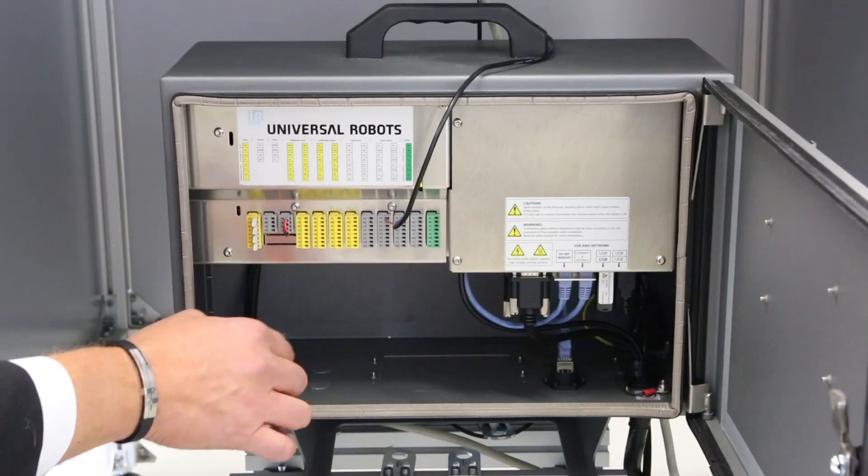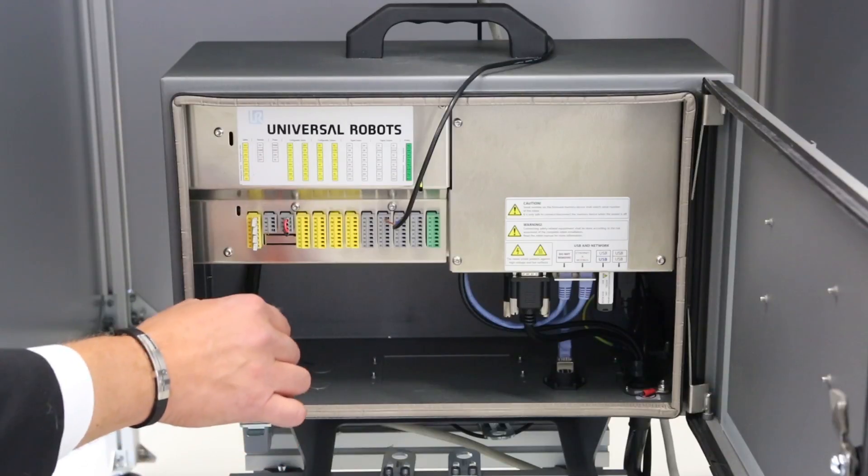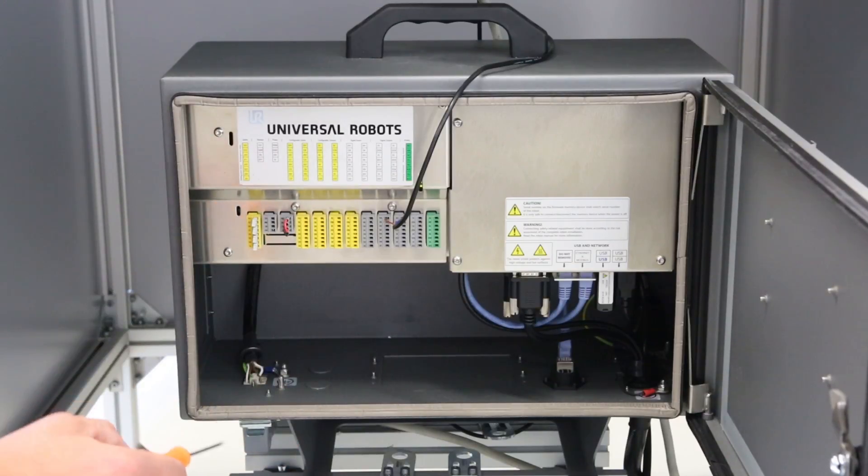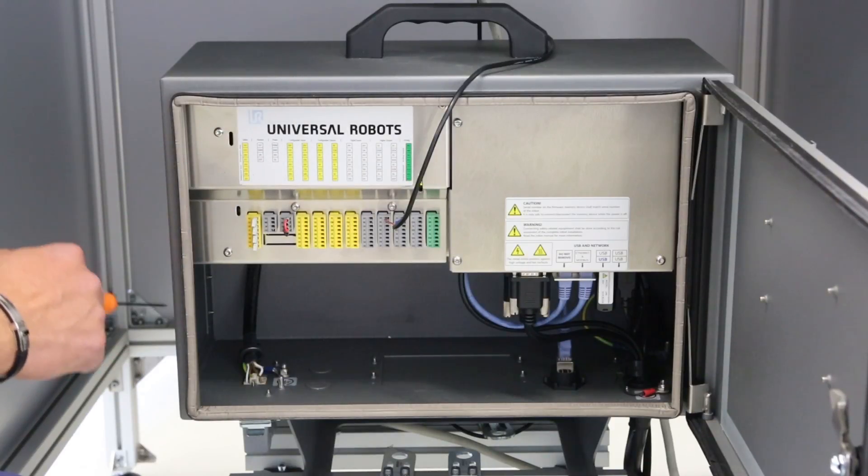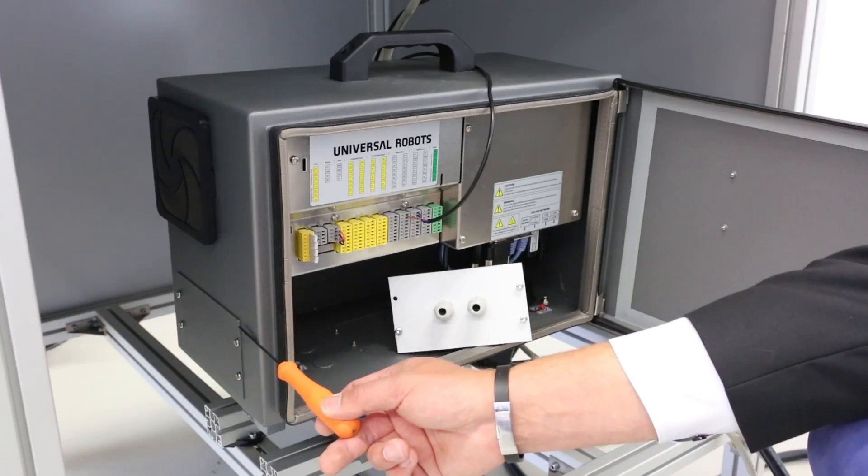To enter into the controller, we have two different possibilities. We have here the PGN holes where you can open and come from down side. Or if you want to come from left or right side, we offer some removable plates where you can make also holes or connection for plugs or whatever you like to.